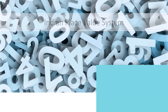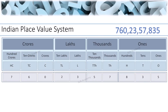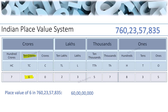Place value: what is place value and how do we find it? The place value of 6 in 760,23,57,835 — 6 is present in the ten crores position, so its place value is 6 × 10 crores, which equals 60 crores. To write 60 crores in digits, count the digits towards the ones place: there are 8 digits, so we place 8 zeros after 6.